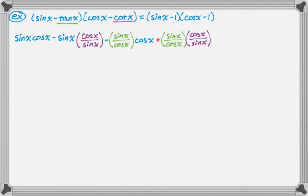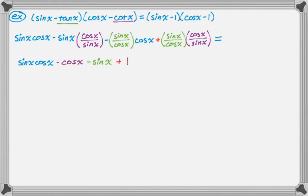Now I'll clean up the fractions. So: sine·cosine, then sine over sine reduces, so just minus cosine; then cosine over cosine reduces, so just minus sine; and then for the last term, sine over sine and cosine over cosine — or you can just remember that a trig function times its reciprocal is just one — so plus one.